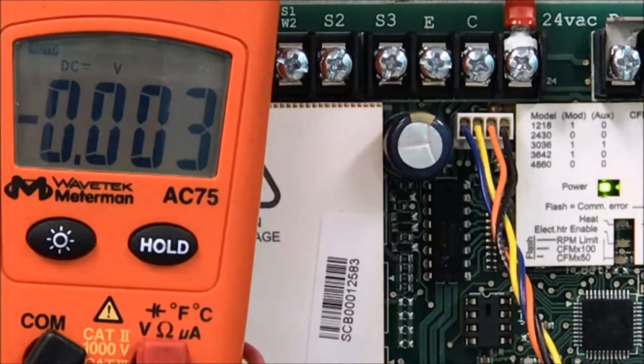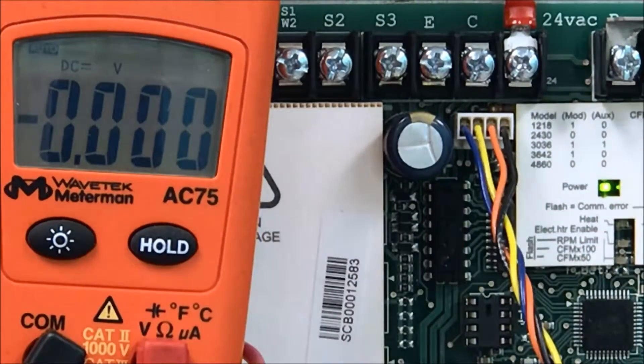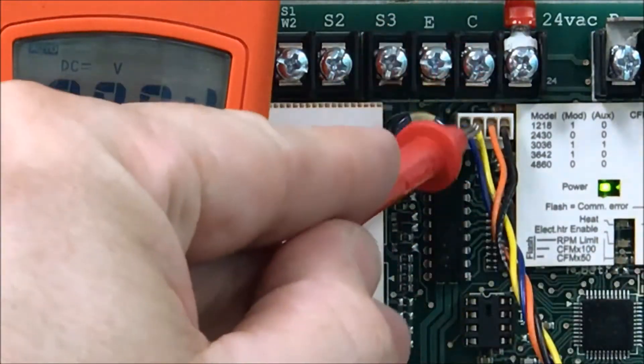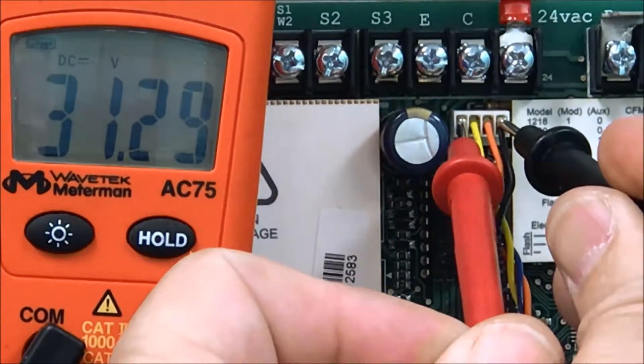So after ensuring that your motor does spin free, the first test we're going to do on the board is we're going to check between the blue wire and the black wire on this connector. Between this blue wire and this black wire, we should have 30 volts DC.